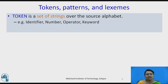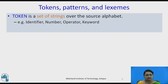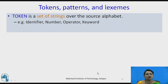Tokens are generally a set of strings from a given source alphabet. Whenever we read any input, which is a sequence of characters, we combine them into the smallest meaningful part of a program. These smallest parts generate information and are categorized — the categories may be identifier, number, operator, or keyword. These are all the tokens generated from the program.